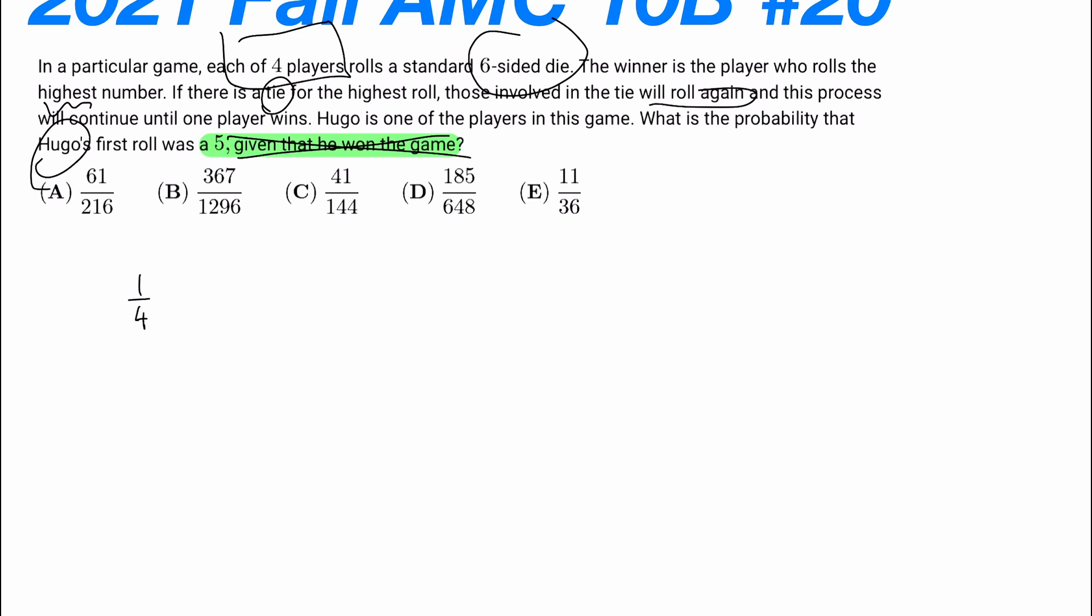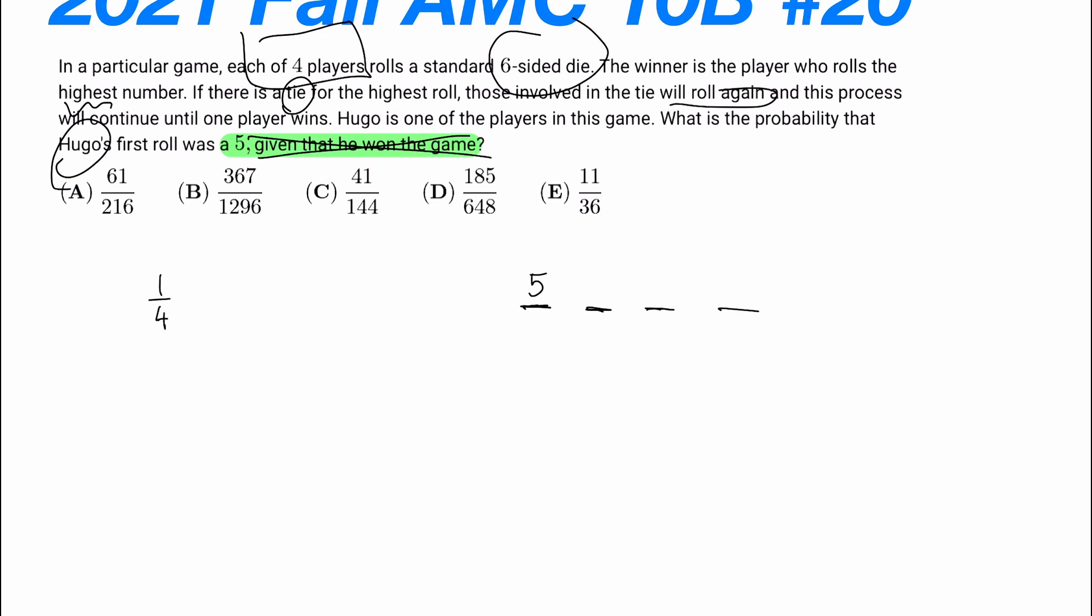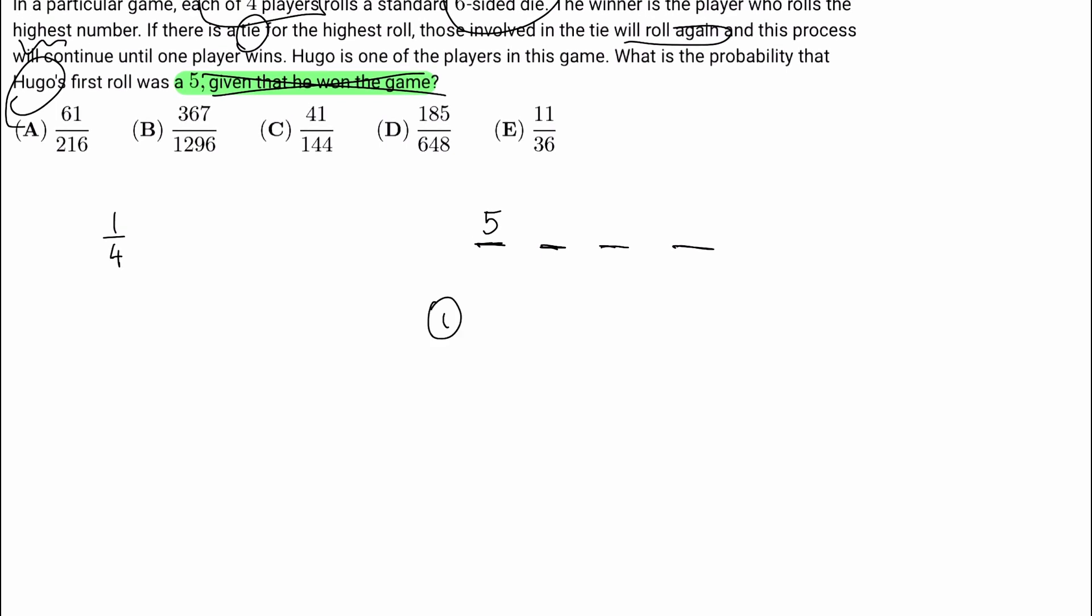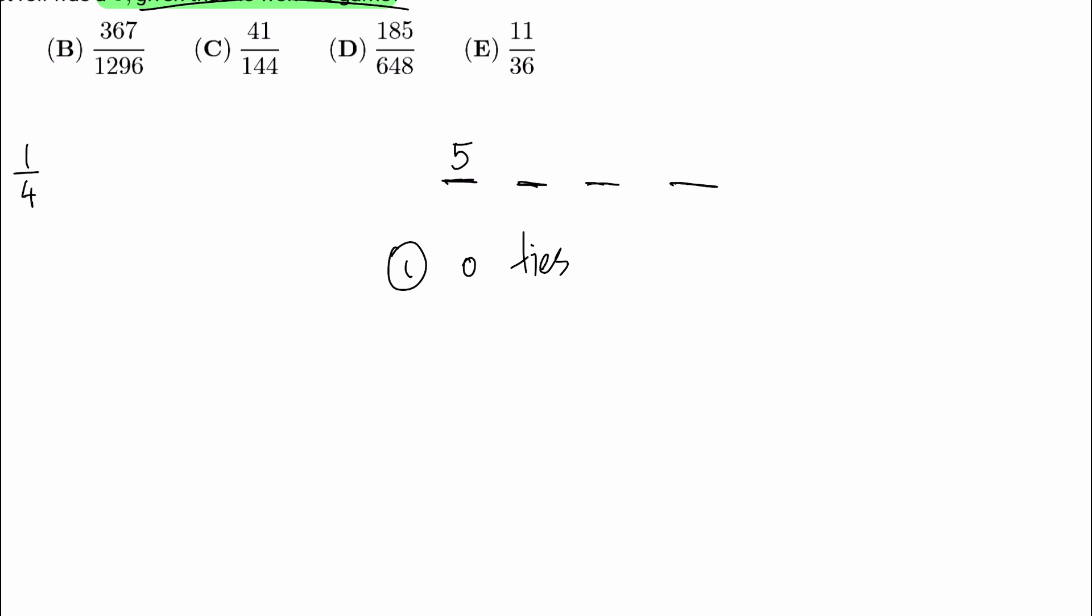Now, if he rolled a five, we're given that he rolled a five, and we don't know the other three people. One, the first case, the best case scenario, he just wins with no ambiguity. He wins in the first round with zero tie, so everyone out of these three are getting one through four. So they're getting four out of the six possible rolls, and we need to cube that because there are three people, and they have to roll a number less than or equal to four.